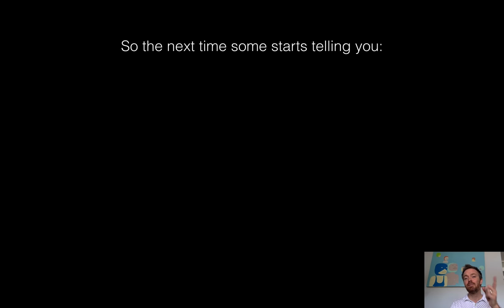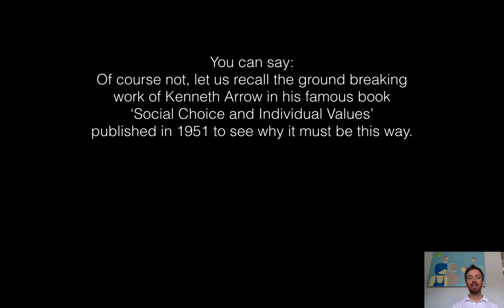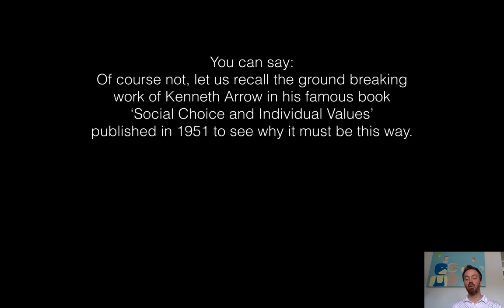So next time somebody says 'it's not fair, we got cheated, the system is rigged,' you can say 'of course — just consider the groundbreaking work of Kenneth Arrow and his famous book Social Choice and Individual Values, published back in 1951, to see why this must be the case.' They'll probably give you a blank look, but I think that would be a good reply.